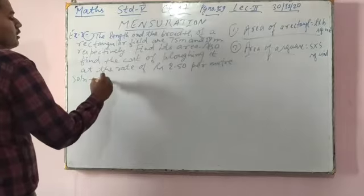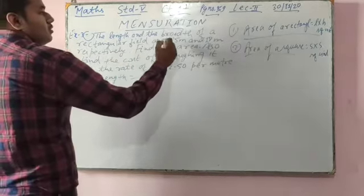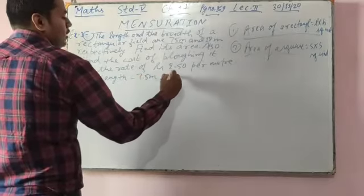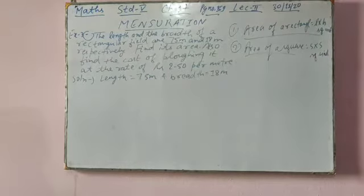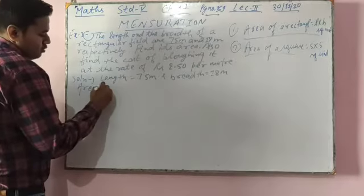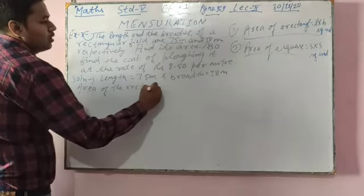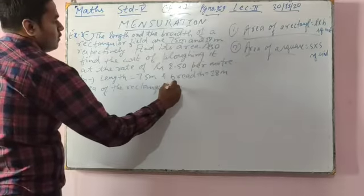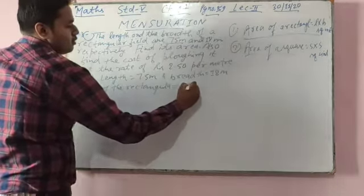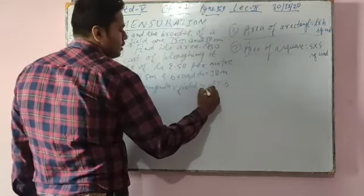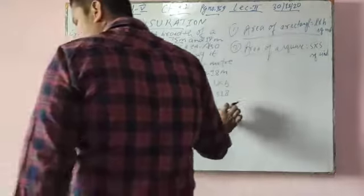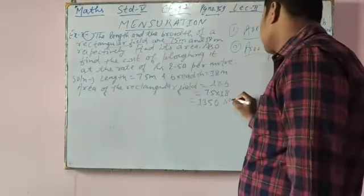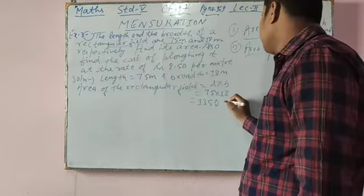Solution: length is given as 75 meters and breadth is given as 80 meters. So using the formula, area will be 75 into 80, and when you multiply you will get 6000 — sorry, 1350 square meters.